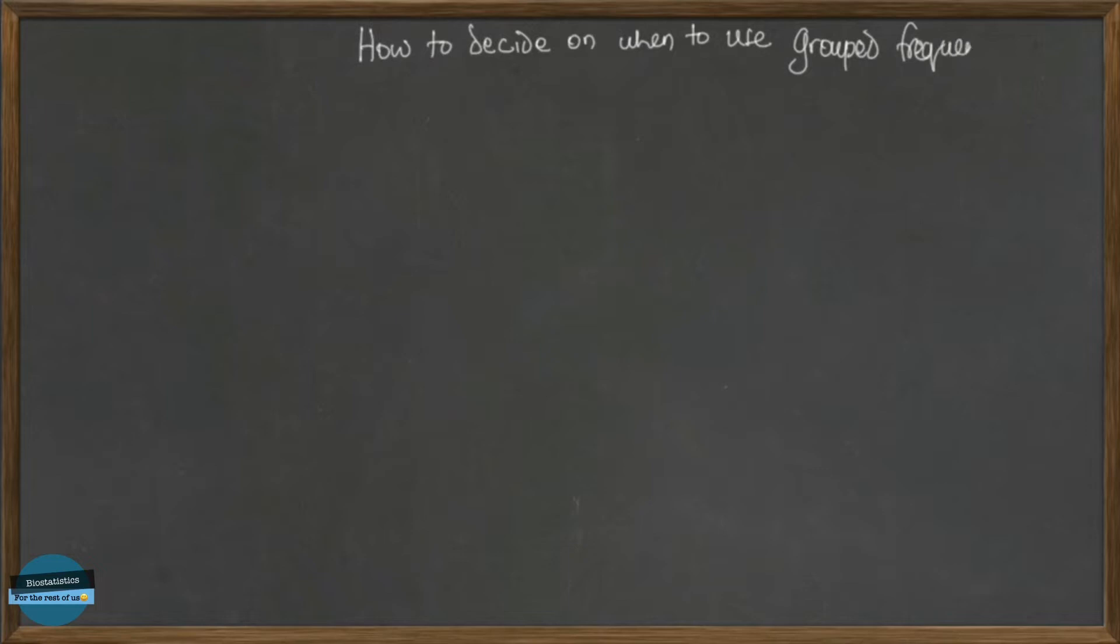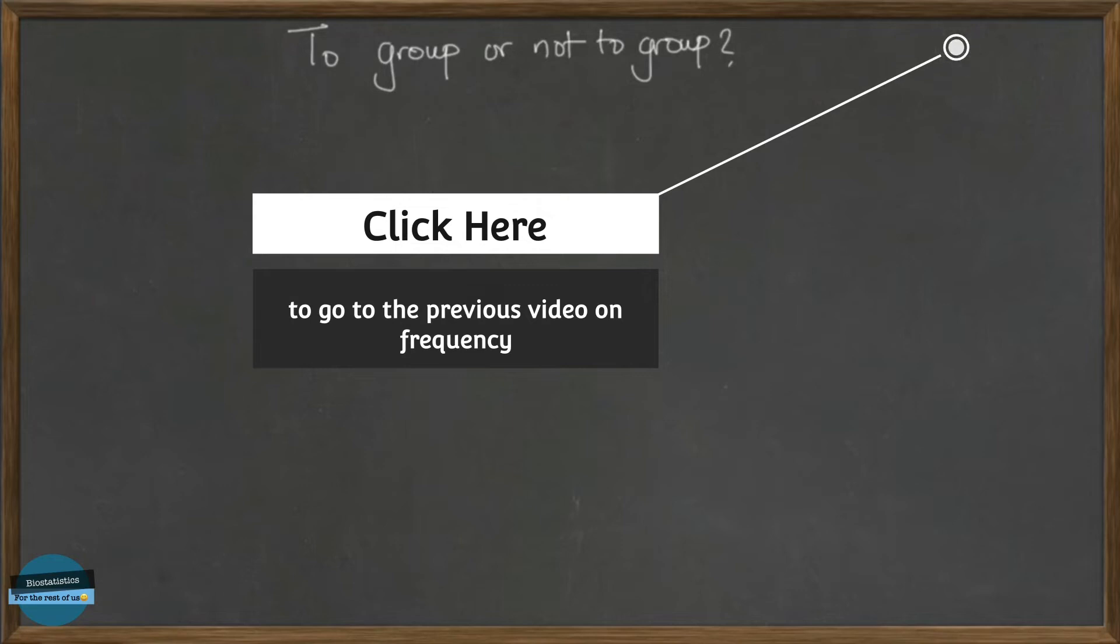How do you decide when to use group frequency? Or better still, do you group or do you not group data that you have? It's actually easy to do an ungrouped frequency distribution when you have some data.